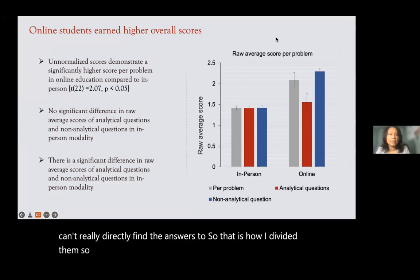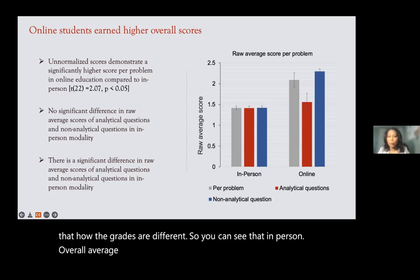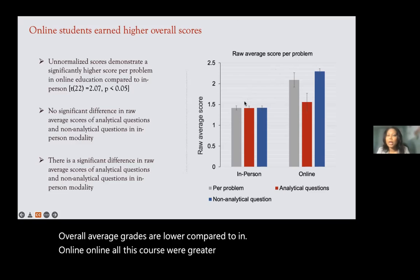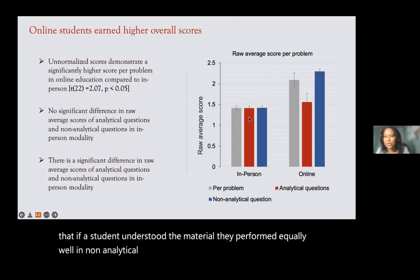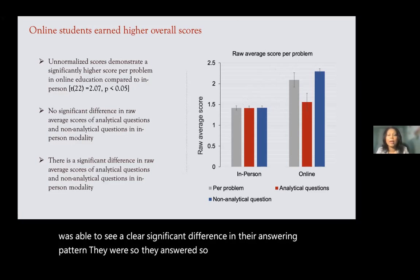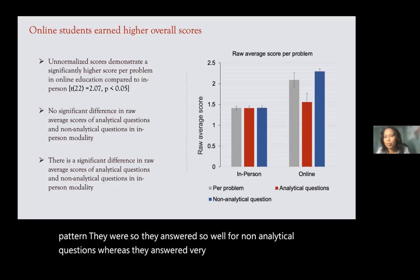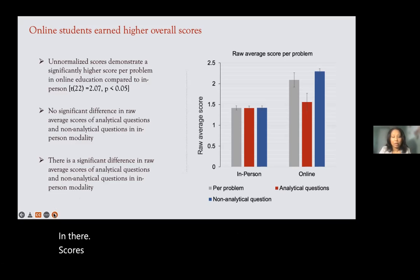In the statistical analysis, using non-normalized raw scores, online grades were overall higher than in-person. However, in-person students who understood the material performed equally well on both non-analytical and analytical questions. In contrast, online students showed a clear significant difference: they answered non-analytical questions very well but performed very poorly on analytical questions.